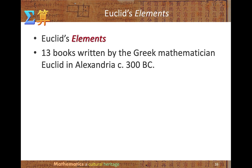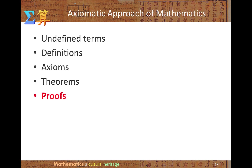Euclid's Elements was a Greek classic on mathematics. There are 13 books in Elements, written by the Greek mathematician Euclid in Alexandria roughly at 300 BCE. It is one of the most-read books in history, second only to the Bible. It adopted an axiomatic approach to mathematics. Unlike Babylonian and Egyptian mathematics, which were practically based, Greek mathematics adopts an axiomatic approach. This starts with undefined terms — terms which could hardly be defined — and then definitions, axioms, theorems, and proofs.